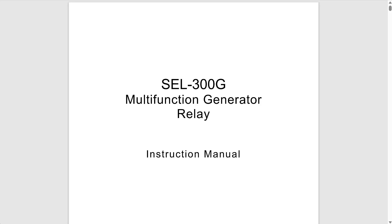The SEL 300G relay implements the loss of field protection by measuring the positive sequence impedance at the generator terminals, and it does this by using two zones of mho elements which we can set with a positive or negative offset. For this video we're going to be focusing on the negative offset scheme, which is the most commonly used one.